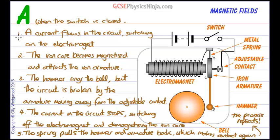So we go right back to the top again, a current flows in the circuit, switching on the electromagnet and so on. I hope that makes sense as a five step process for an electric bell.